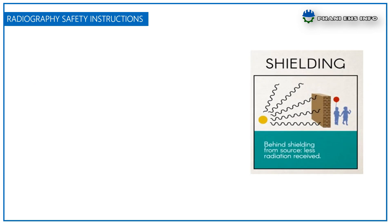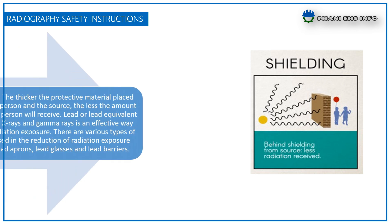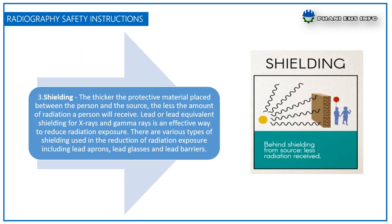The next principle is shielding. The thicker the protective material placed between the person and the source, the less amount of radiation a person will receive. Lead or lead equivalent shields for x-rays and gamma rays is the effective way to reduce radiation exposure.